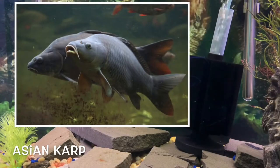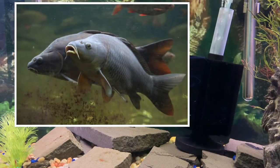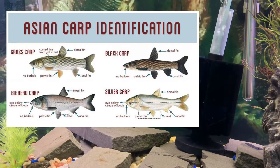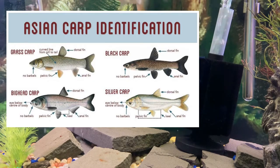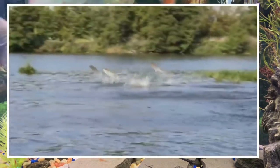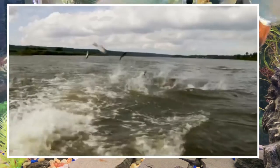Is it invasive if we actually introduced it? These are the Asian carp — the bighead carp, the black carp, the grass carp, and the silver carp. They're all known as the Asian carp and are causing a lot of problems in the Mississippi River.